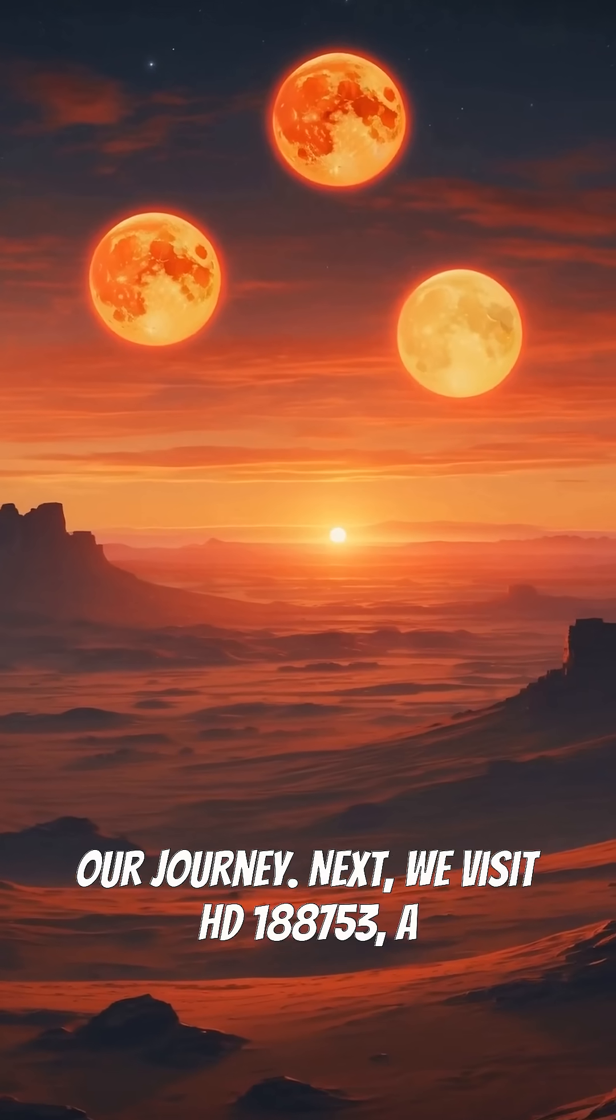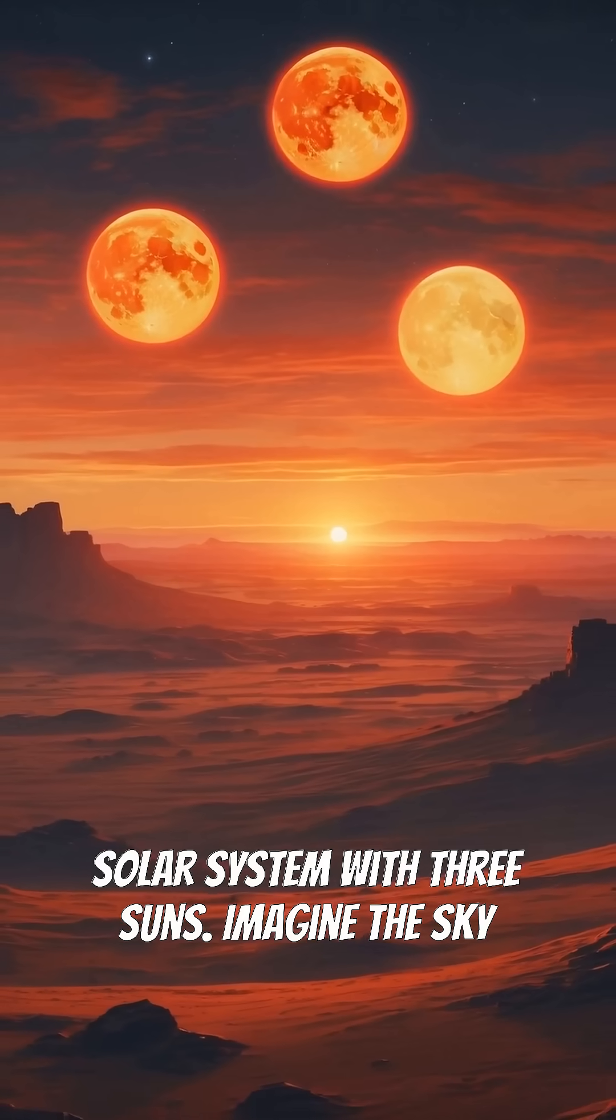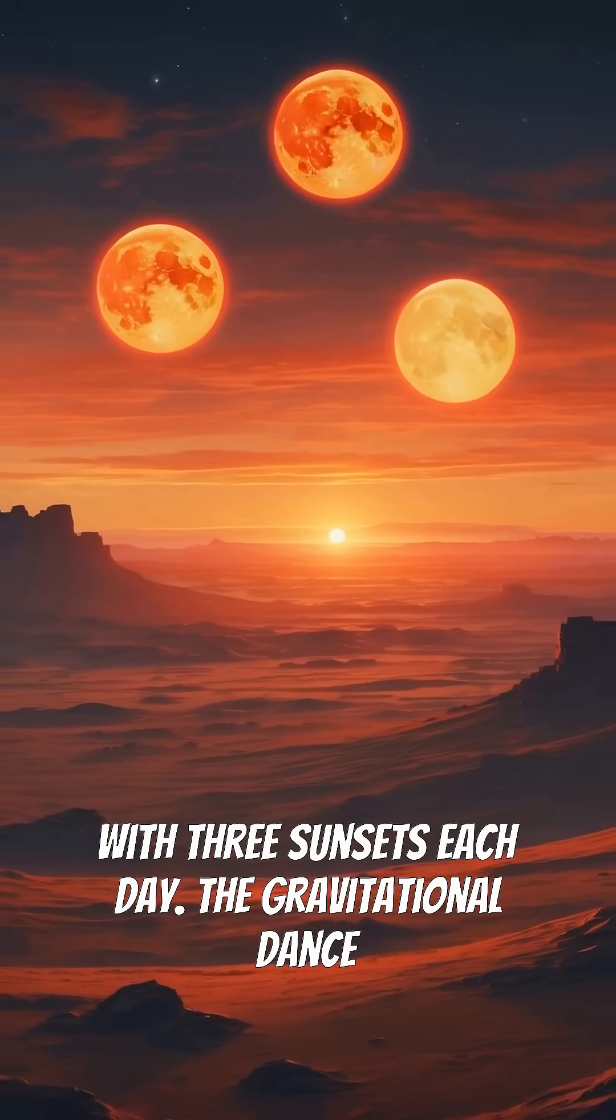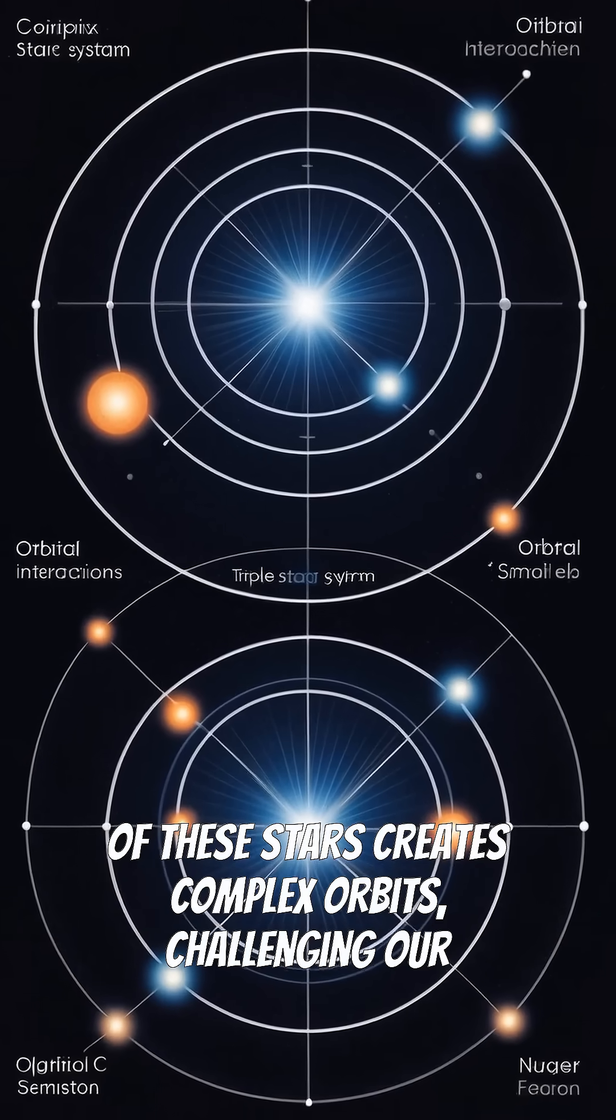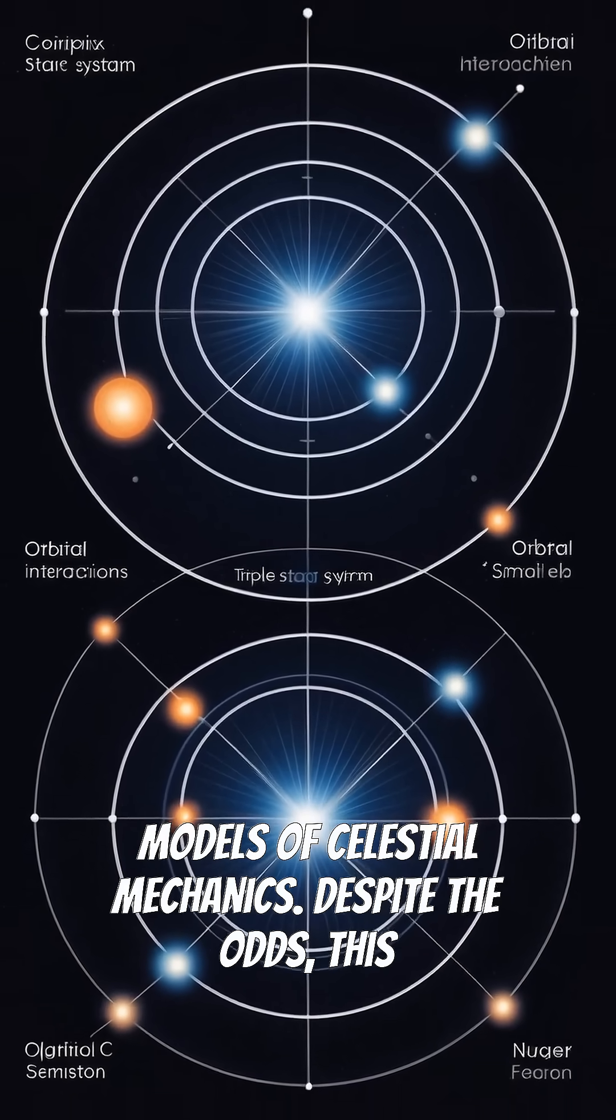Next, we visit HD 188753, a solar system with three suns. Imagine the sky with three sunsets each day. The gravitational dance of these stars creates complex orbits, challenging our models of celestial mechanics.